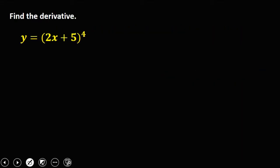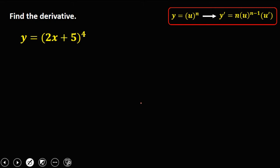We have this given: find the derivative of y equals (2x + 5) to the power 4. From the formula, u is 2x + 5. To get u prime, the derivative of 2x is 2, and the derivative of 5 is 0 because the derivative of a constant is 0. So u prime equals 2.